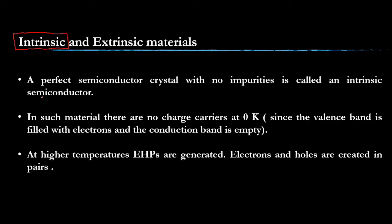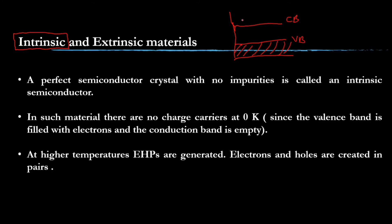A perfect semiconductor crystal with no impurities is called an intrinsic semiconductor. Simply put, a very pure silicon solid — a solid which has only silicon atoms — is known as an intrinsic semiconductor. In such a material there are no charge carriers at zero Kelvin. In intrinsic semiconductor, the valence band is completely filled and the conduction band is completely empty.